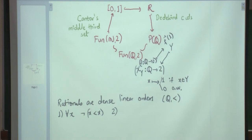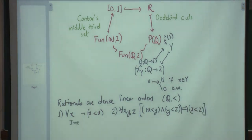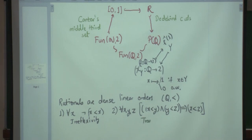Transitivity holds: if x is less than y and y is less than z, then x is less than z. Formally: for all x, y, z, if x < y and y < z, then x < z. The first property is called irreflexivity — the opposite of reflexivity. Reflexivity says an element is always related to itself; irreflexivity says an element is never related to itself. The second property is transitivity.